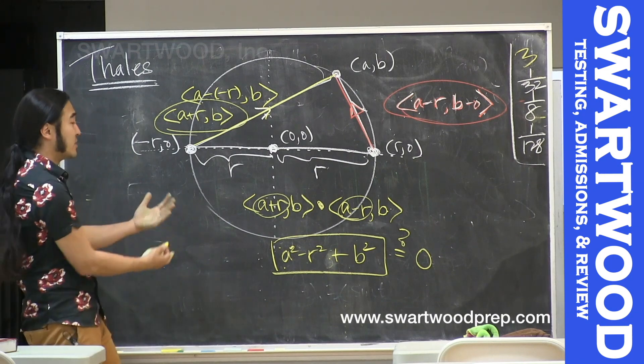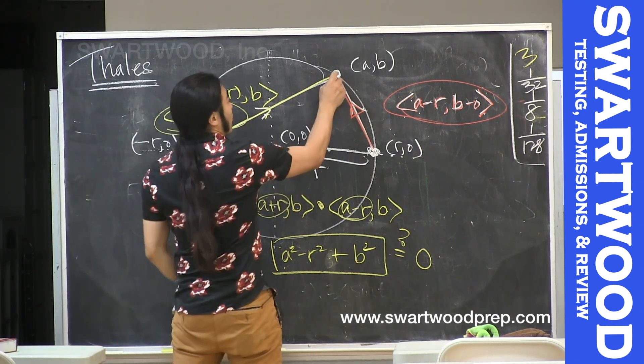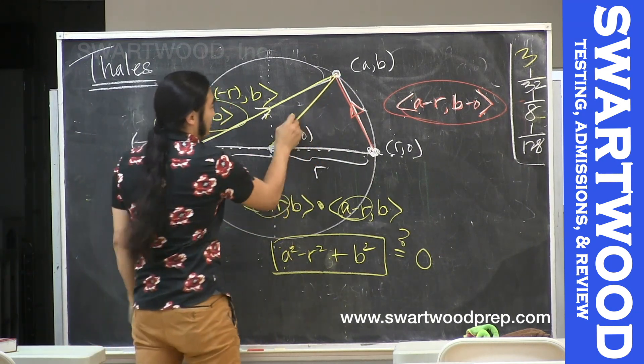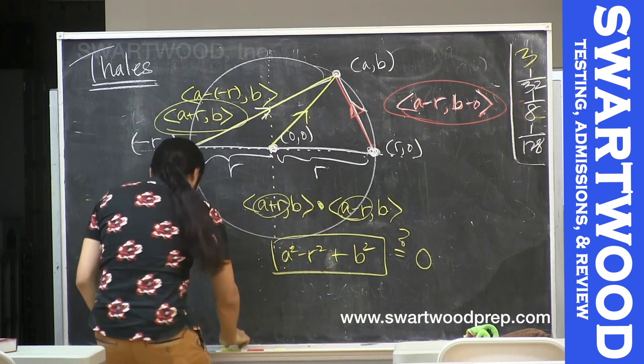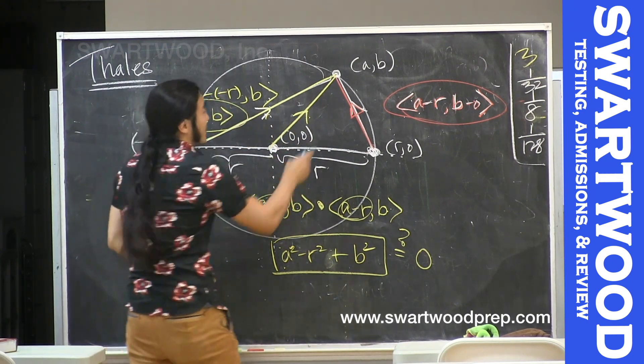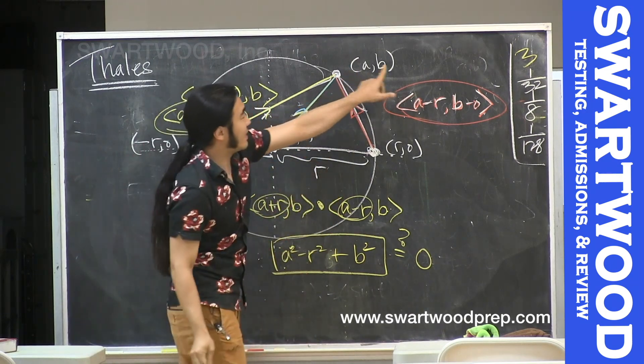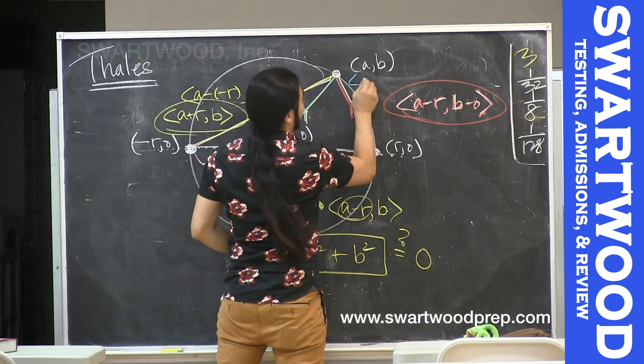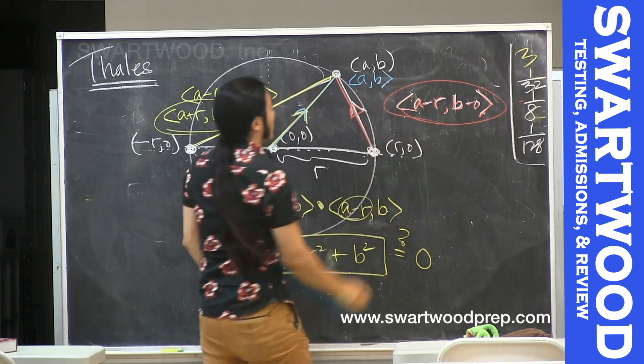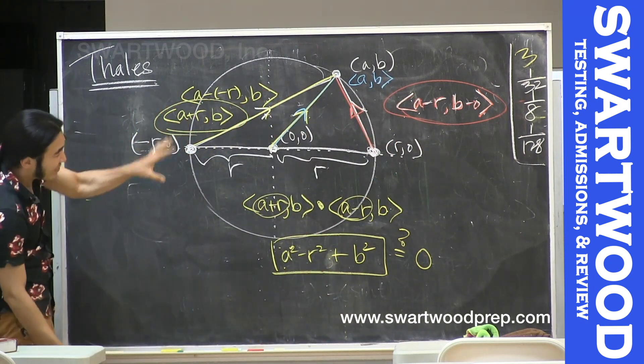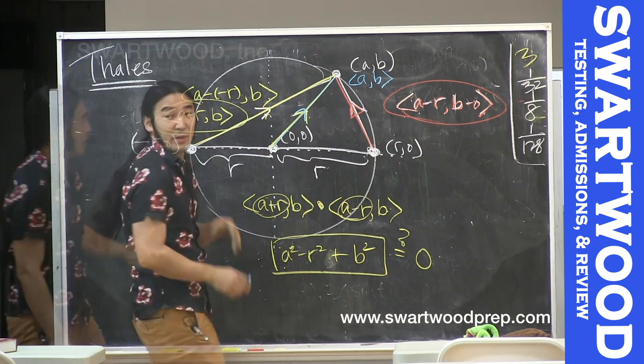I think one other thing is we've got one more radius, let's take this one. And this vector, let's call him, well this is easy, (a,b) - (0,0), so I guess this vector is (a, b). The length of (a,b) is also R because this is a radius.